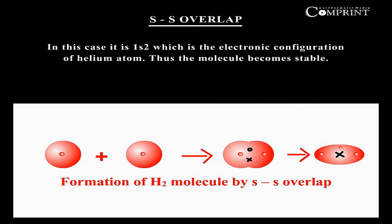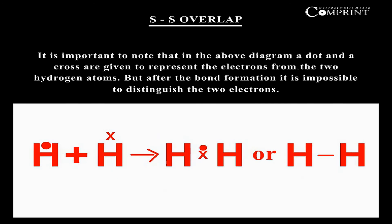In this case, it is 1s², which is the electronic configuration of helium atom. Thus, the molecule becomes stable.